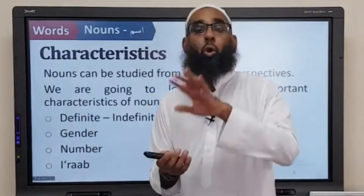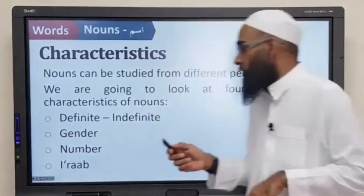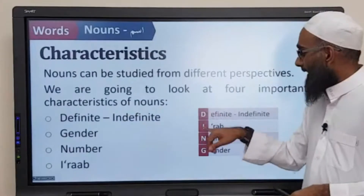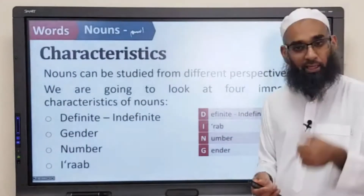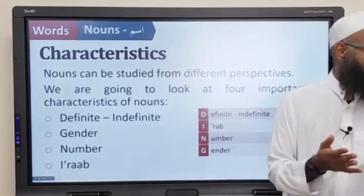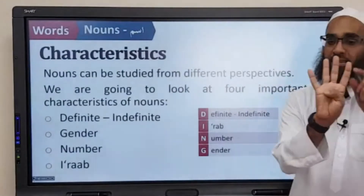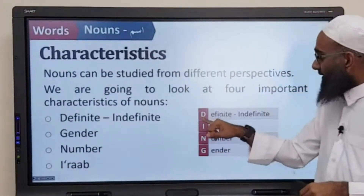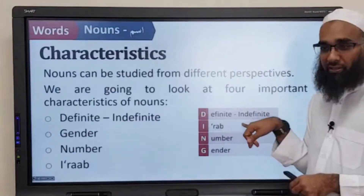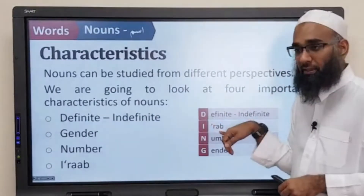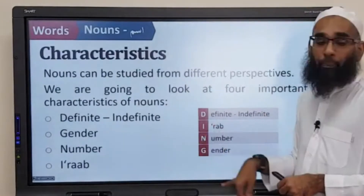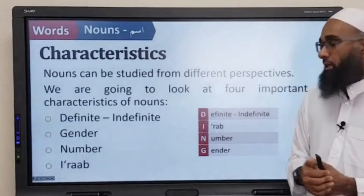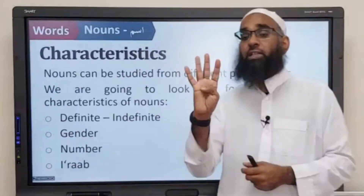These may sound alien to you — don't worry about them. All I want you to remember for now is a very simple code: DING. D-I-N-G. D represents definite and indefinite. I represents i'rab. N represents number. And G represents gender. So these are the four characteristics of a noun.